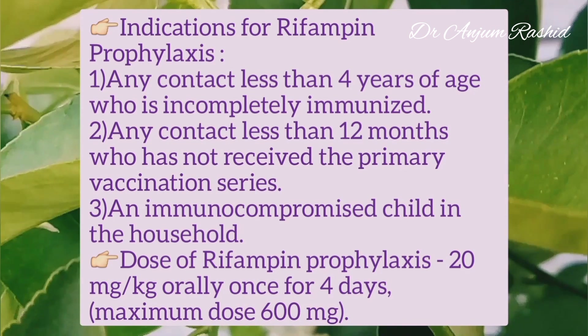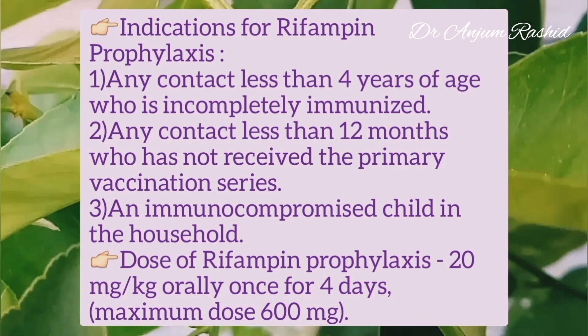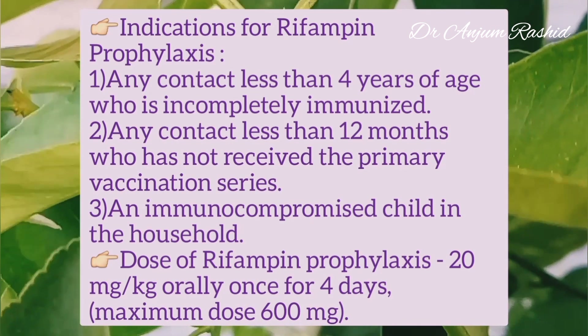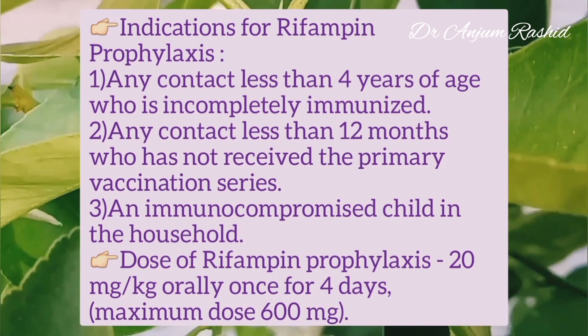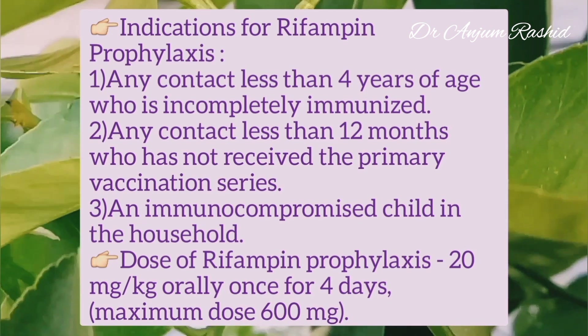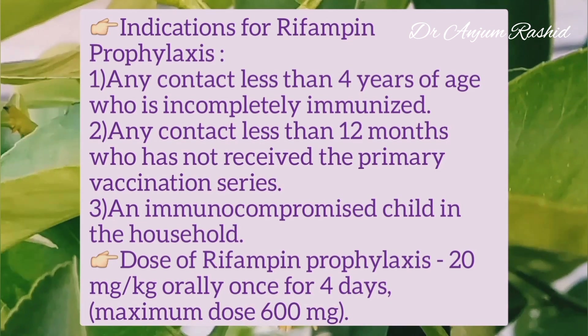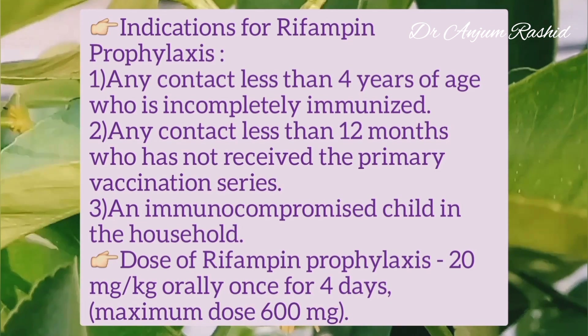The dose of rifampicin prophylaxis is 20 mg per kg orally once daily for 4 days, and the maximum dose is 600 mg.